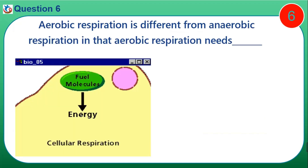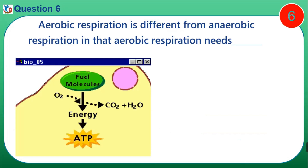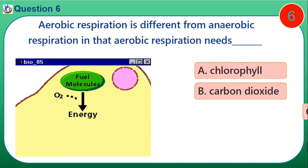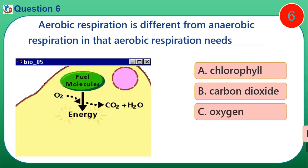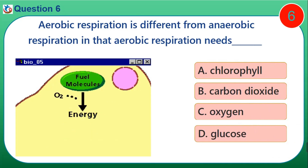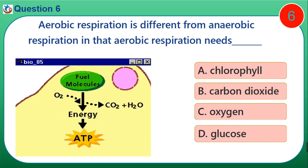Thank you. Question 6. Aerobic respiration is different from anaerobic respiration in that aerobic respiration needs dash. A. Chlorophyll. B. Carbon dioxide. C. Oxygen. D. Glucose.